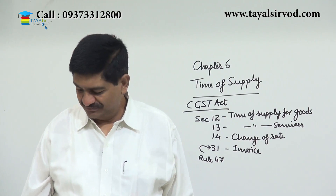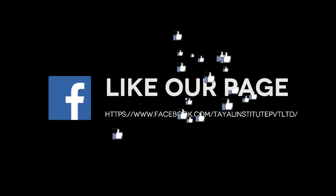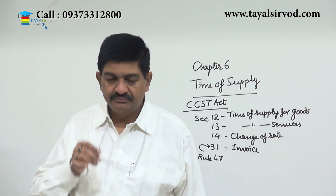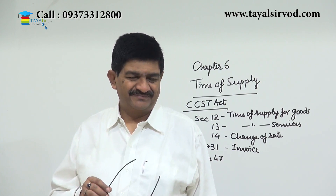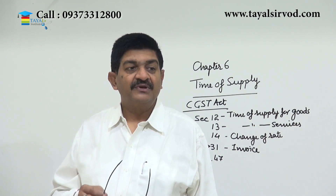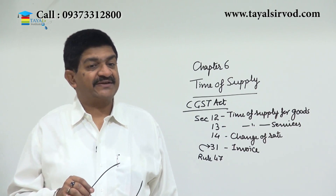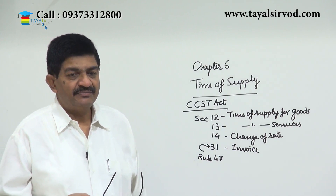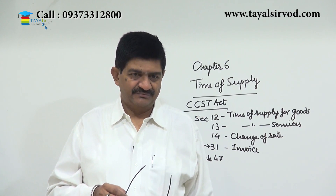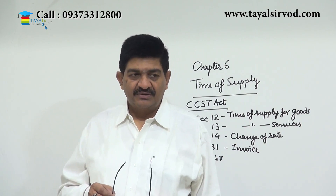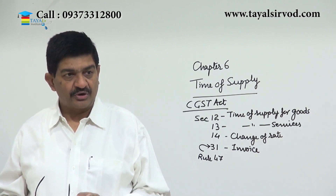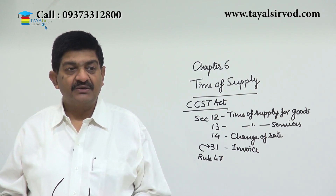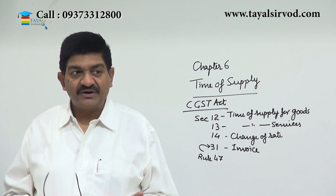'Goods' means all movable property, including actionable claims but excluding money and securities. It further includes grass and growing crops which are required to be separated or severed under the contract of sale.